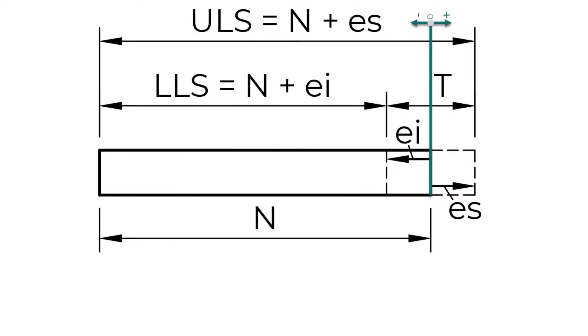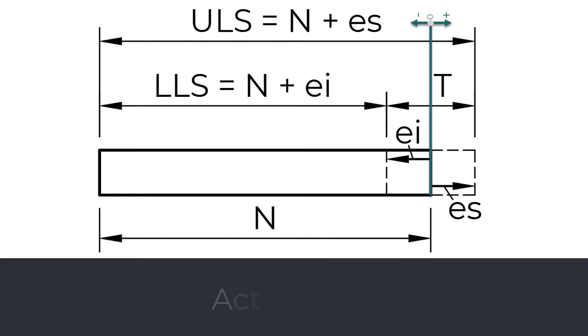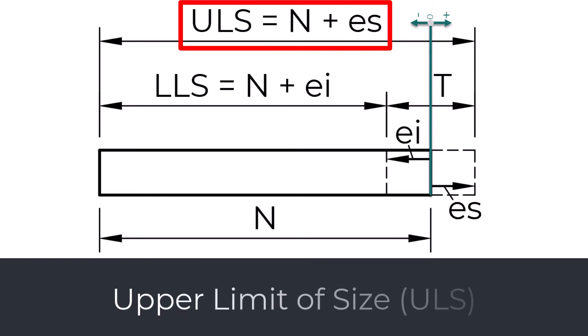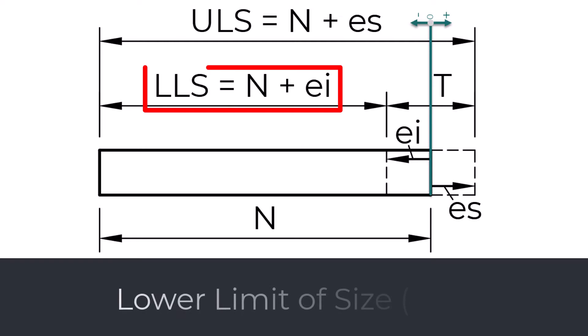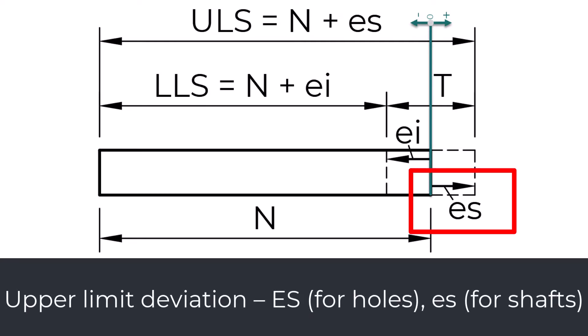Let us look at the graphical representation of the tolerances. Nominal size N is the dimension of the feature defined on the drawing, representing the feature with its ideal form — note that the letter N is no longer in use, but we will use it for easier understanding. Actual size is determined by measuring the defined dimension after manufacturing. Upper limit of size (ULS) is the larger of the two permitted sizes. Lower limit of size (LLS) is the smaller of the two permitted sizes. Upper limit deviation — ES (uppercase for holes, lowercase for shafts) — is defined as the upper limit minus the nominal size.